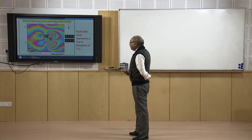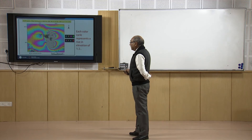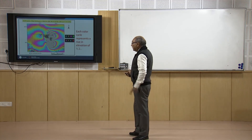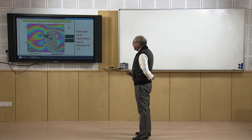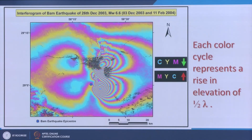Starting from the center and moving outward: if the colour sequence is cyan–yellow–magenta, that area has probably subsided. If the sequence is magenta–yellow–cyan, that means the area has risen. One fringe corresponds to half the wavelength: for ENVISAT C band at 5.6 centimeters, half the wavelength is 2.8 centimeters. By counting the number of fringes and multiplying by 2.8, the exact deformation is obtained. This can also be done using software, and a deformation map was generated in this case.